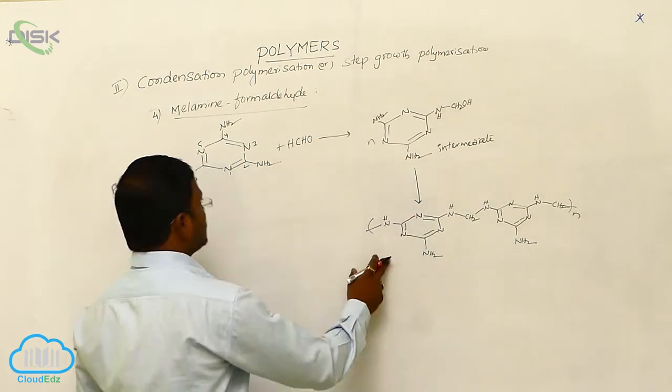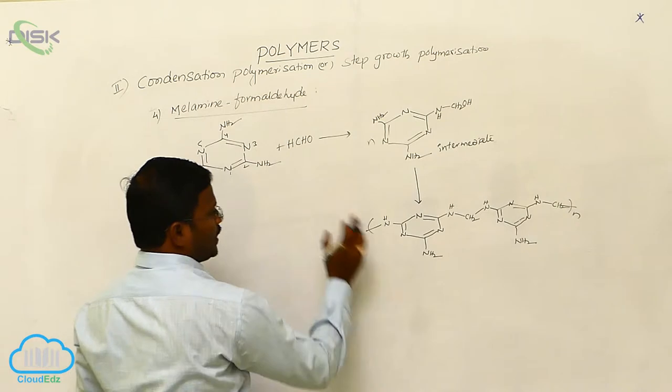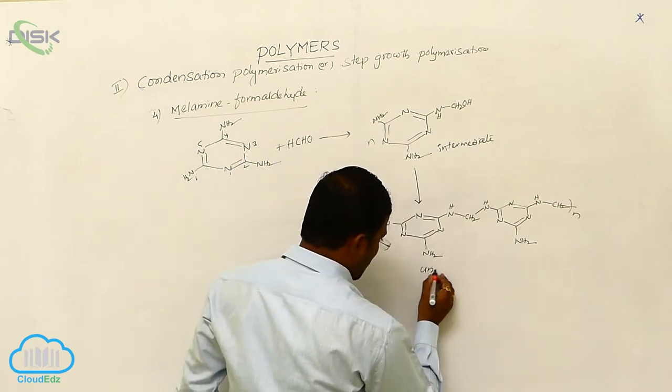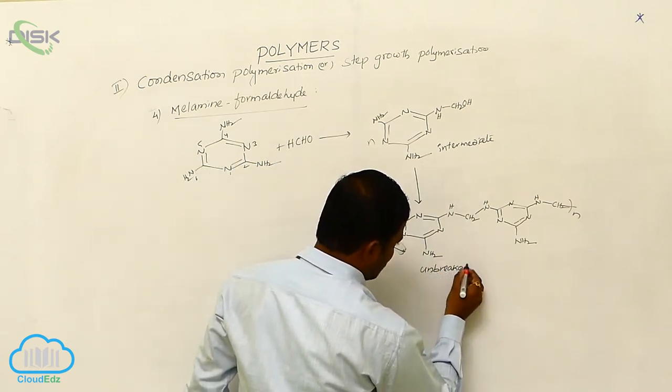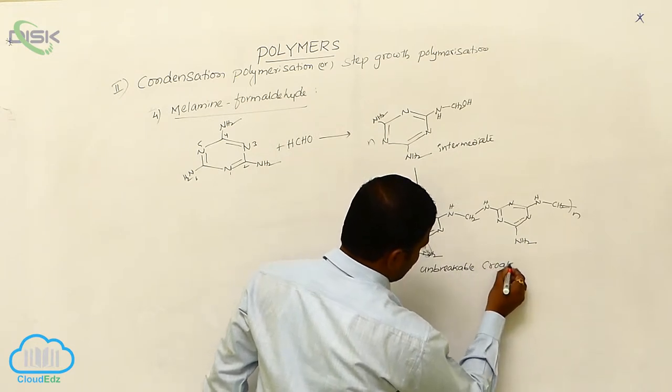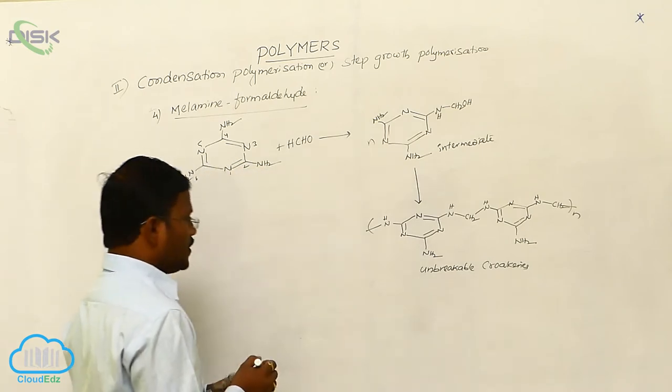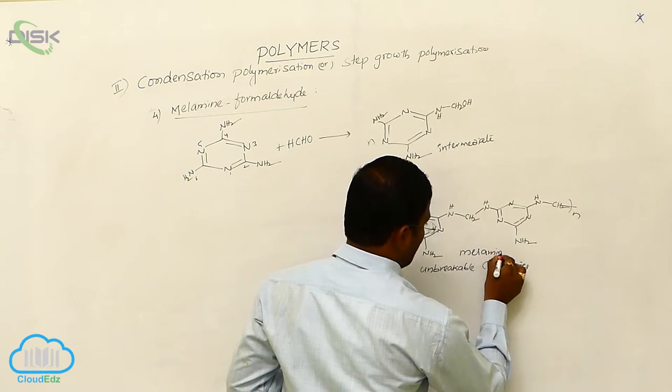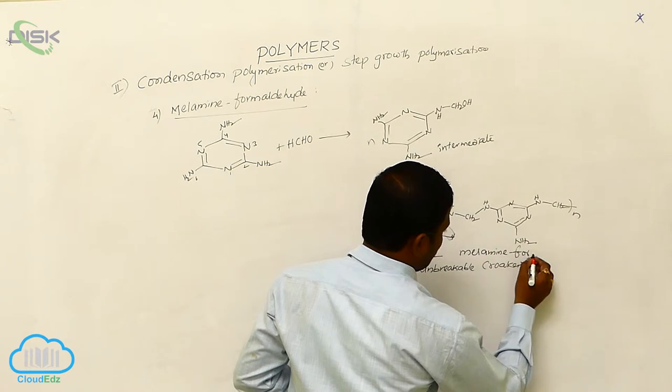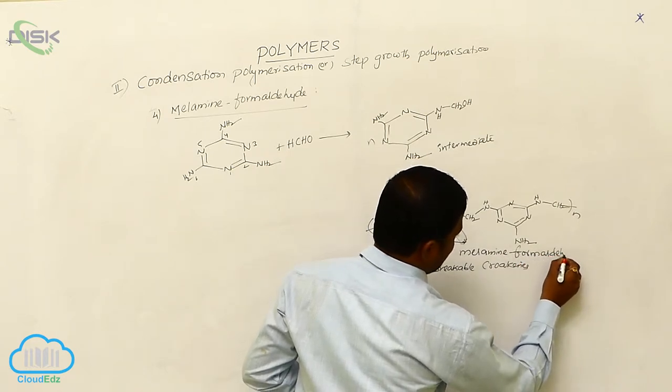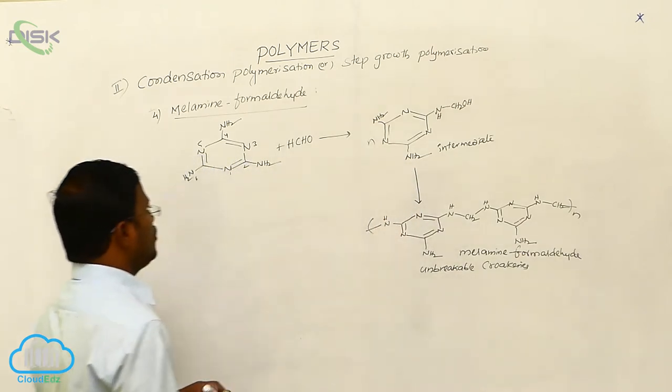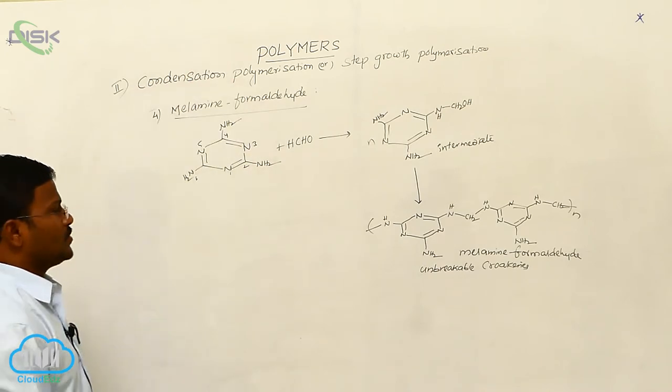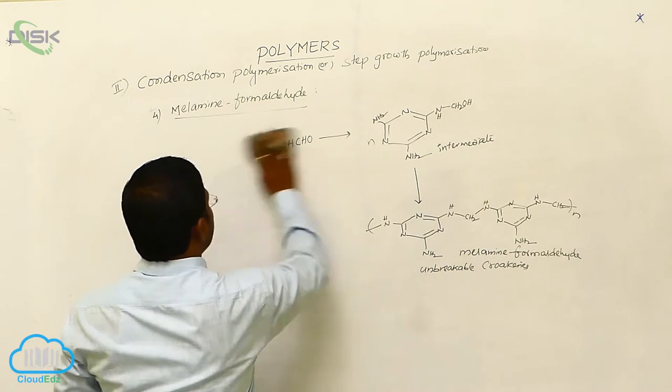The resulting species is called melamine formaldehyde polymer, and this melamine formaldehyde polymer is generally used in unbreakable crockery. This melamine formaldehyde polymer is produced from condensation reaction, hence it is called condensation polymerization.